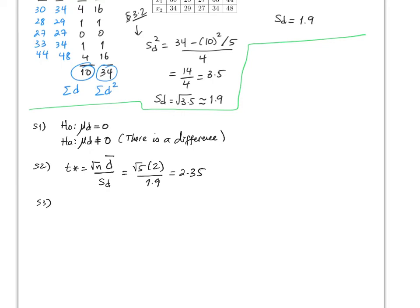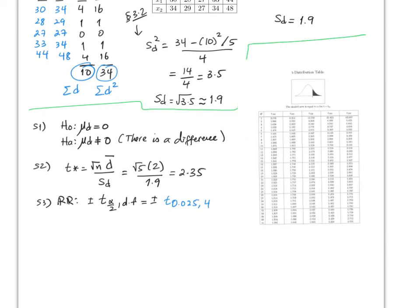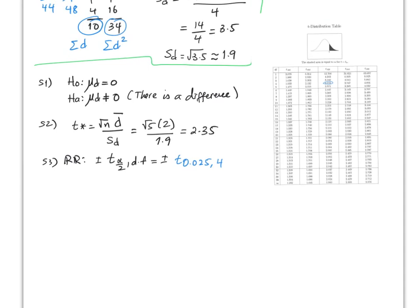For Step 3, the rejection region is plus or minus t of alpha over 2 with degrees of freedom. With alpha = 0.05, we use plus or minus t of 0.025 with 4 degrees of freedom (n minus 1 = 5 minus 1). Looking up 4 degrees of freedom and 0.025 in the t-table gives the critical value 2.776, so the rejection region is plus or minus 2.776.